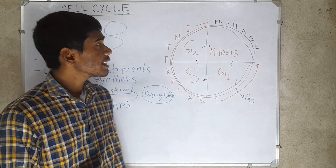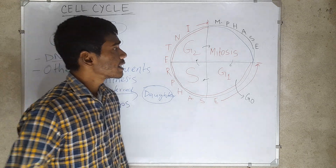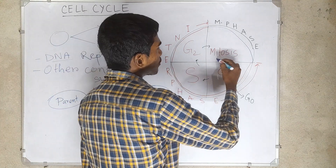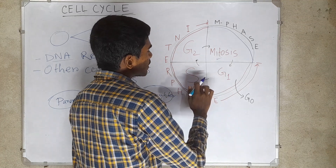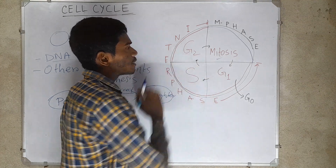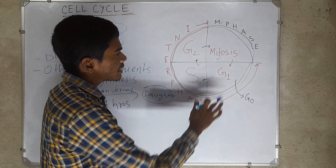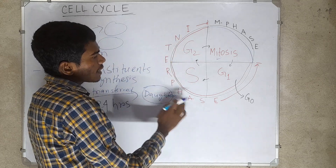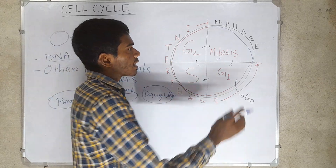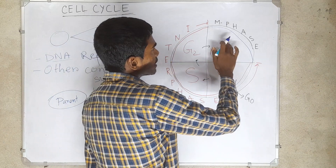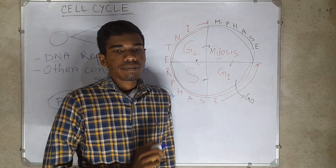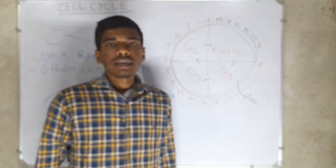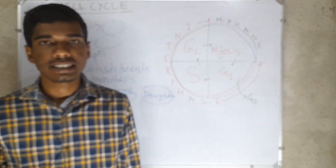The cell cycle contains four main phases: mitosis, G1, S, and G2. The G1, S, and G2 phases are collectively called interphase, and mitosis is called the M phase. Let's discuss these phases.